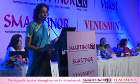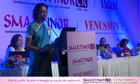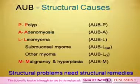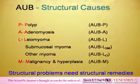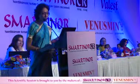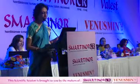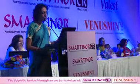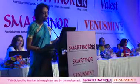It depends on what is the actual underlying disease for AUB when you need to talk about treatment. The structural causes we've heard about enough. When you make a structural diagnosis, you cannot cure it with medical management. If the structure is wrong, you have to correct the structure. So almost all of them go for some sort of surgical management. There cannot be one single appropriate management approach for a heterogeneous group of disorders — structural problems need structural remedies.